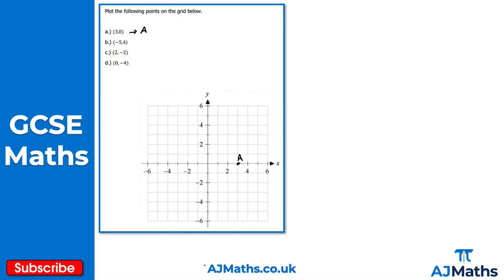For point B we have (-5, 4). Remember we start with the x-coordinate: it's negative so we go five units to the left — one, two, three, four, five — and then we go up four units because that's positive: one, two, three, four. That's point B.